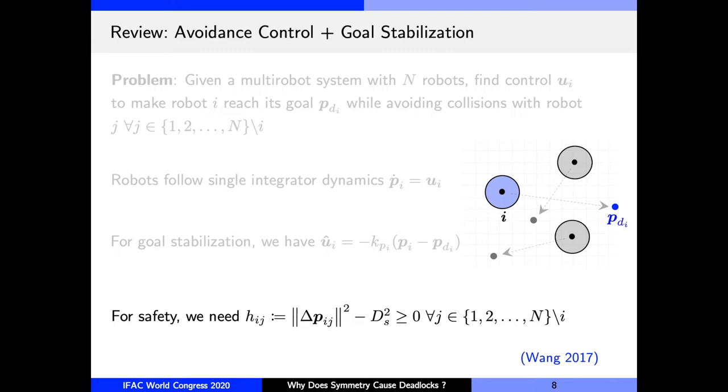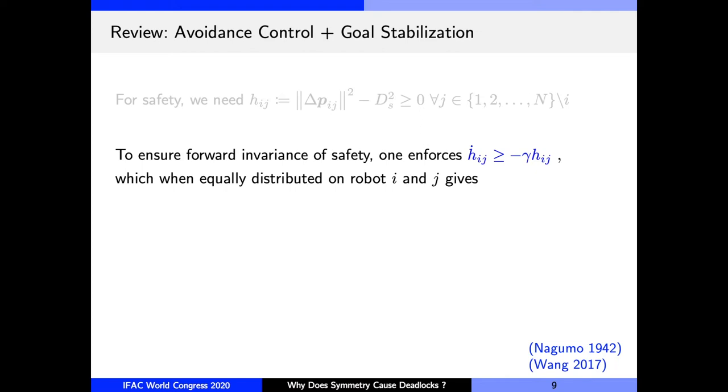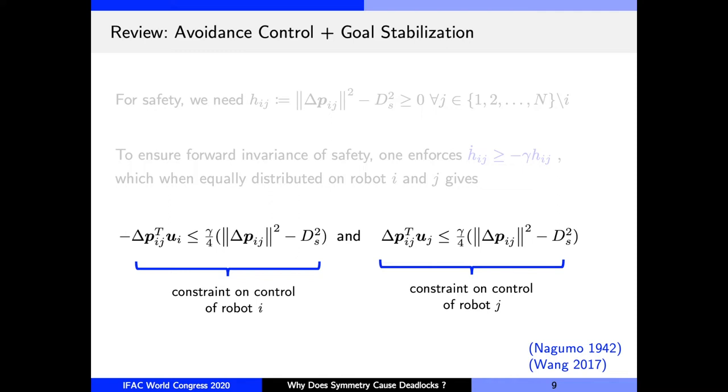So as I said earlier, for i and j to be collision-free, we require that h_ij to be non-negative. To ensure that it continues to be non-negative, we enforce this condition on the derivative of the safety index, h_ij. Ultimately, this condition gives us constraints on the controls of robots i and j, respectively, and if the controllers of these robots satisfy this constraint, that will ensure that subsequent motions of the robots are collision-free.